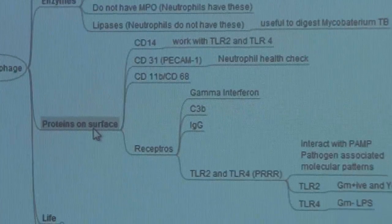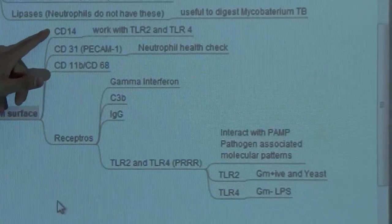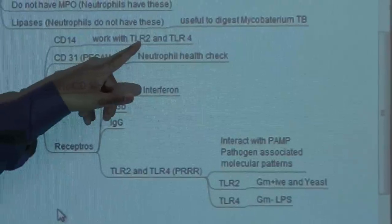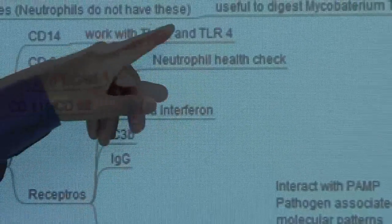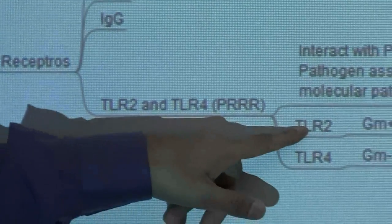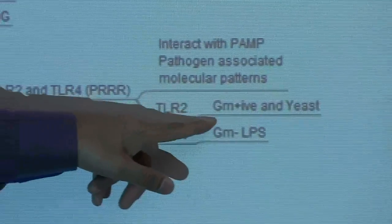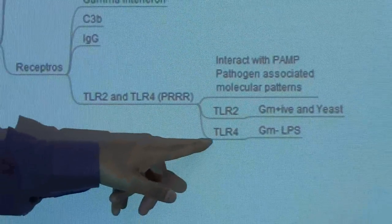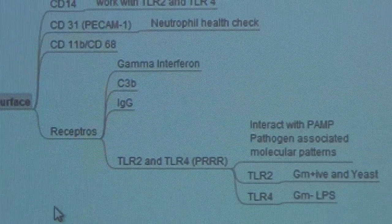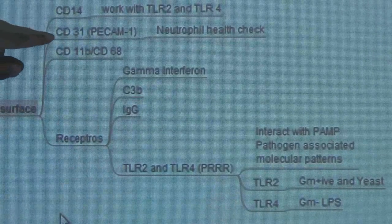Do not get scared. They are going to be a lot, but not too much. Remember CD14? CD14 is a protein present in the surface of the macrophage with toll-like receptor 2 and toll-like receptor 4. Toll-like receptor 2 helps macrophages recognize gram-positive and yeast substances. Toll-like receptor 4 helps recognize gram-negative. This is a USMLE question.